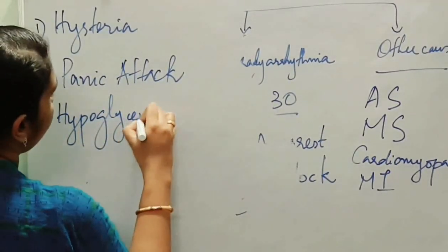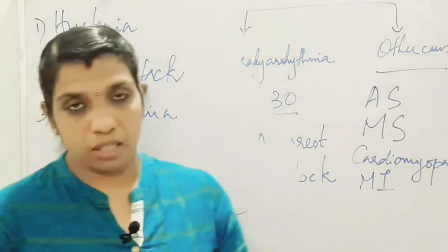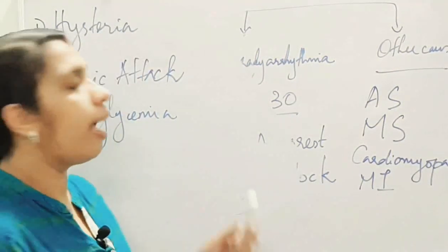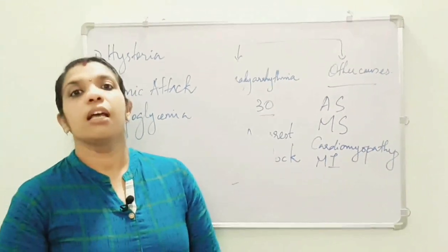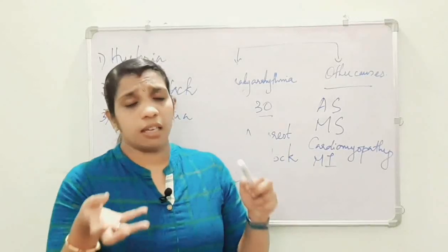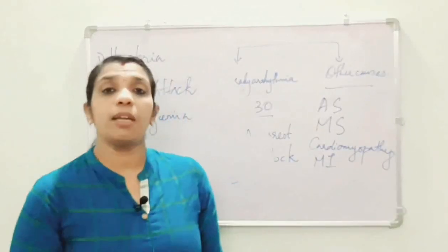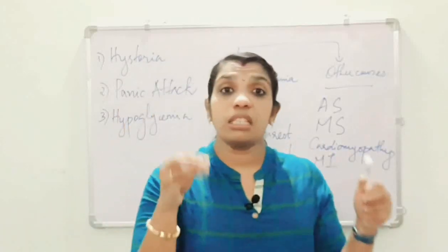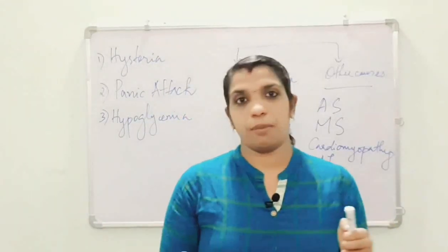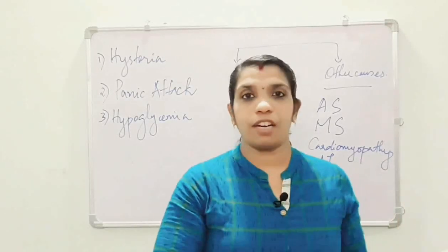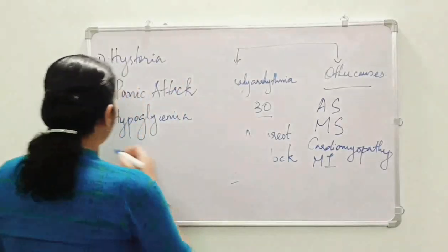The third differential is hypoglycemia. In hypoglycemia, the patient may have disorientation and loss of consciousness. By testing blood sugar levels — especially in diabetic patients presenting with a syncope-like condition — we can differentiate hypoglycemia from true syncope.